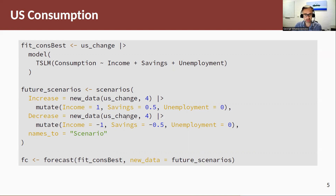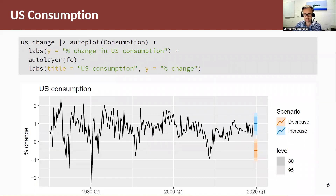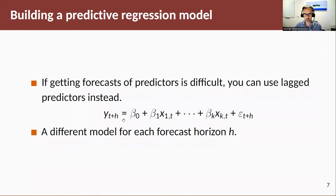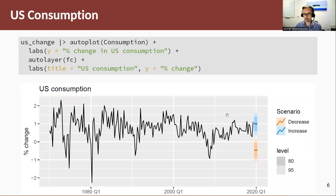An alternative scenario would be something more pessimistic, where income decreases by 1% and savings decrease by 0.5%, with no change in unemployment — we'll call this our decrease scenario. Once you build this, you pass it into the forecast function together with your estimated model, and that will generate the forecasts automatically. Here we see the two scenarios: the optimistic one where income and savings increase, and the one where savings and income decrease by 0.5%.